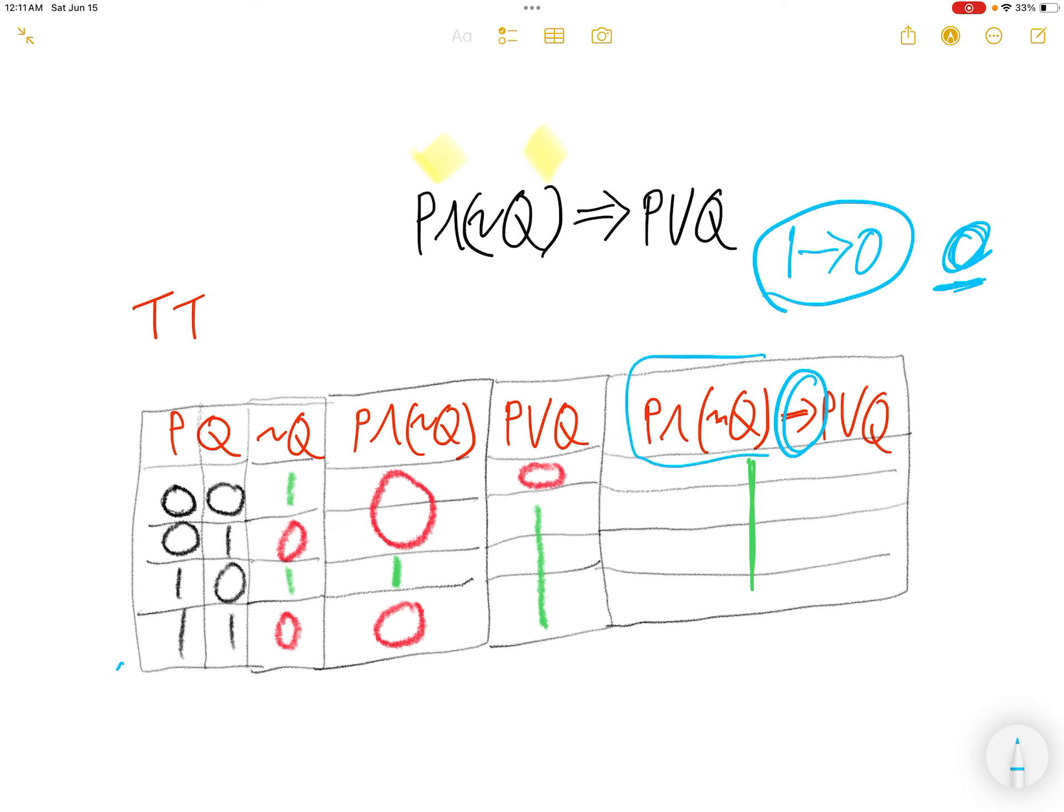Look for this column and look for this column. P and not q. This column. P or q. This column. Look for 1. Not, not, not. So, 1 potential.